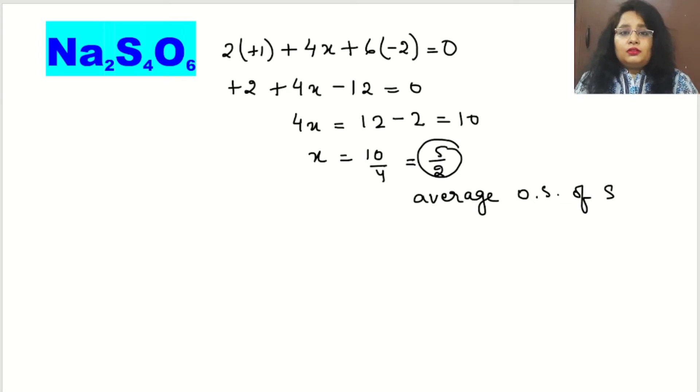So this is okay if the question is about the average oxidation number. But when there is a question to find the oxidation number of each and every sulfur in Na₂S₄O₆, so we can see easily that there are 4 sulfur atoms.